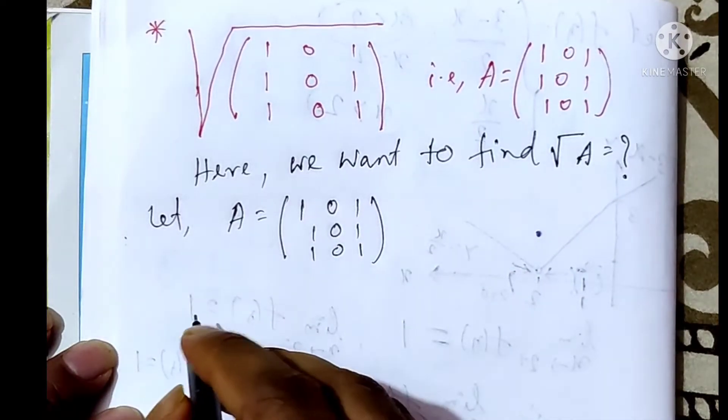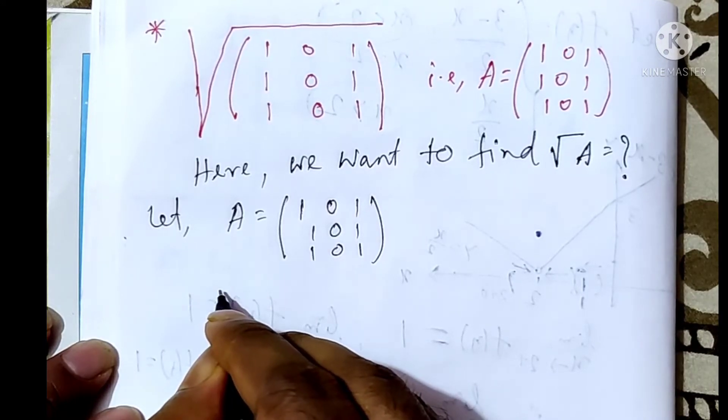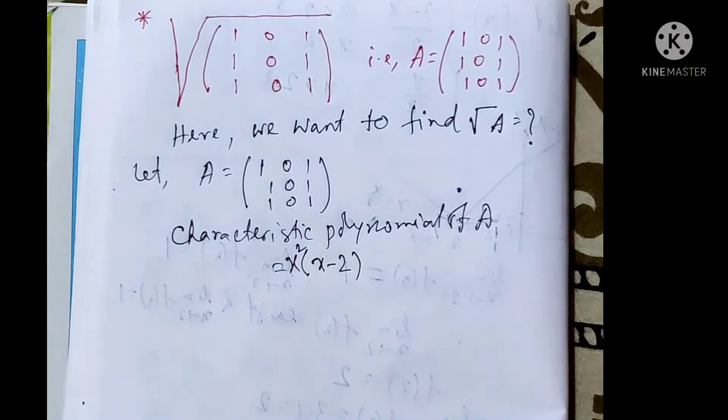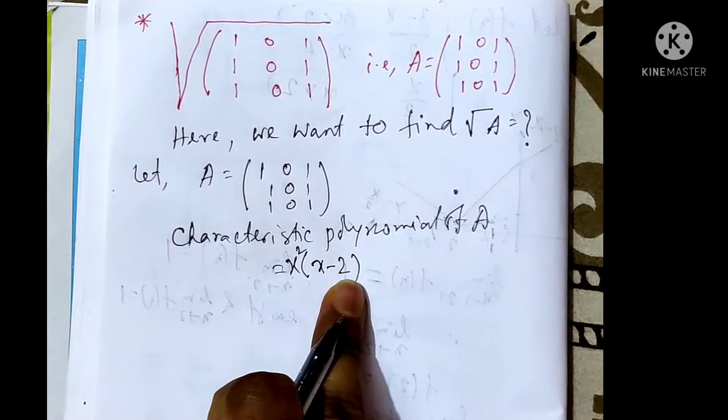0, 1. The characteristic polynomial of this A is x squared times (x minus 2).